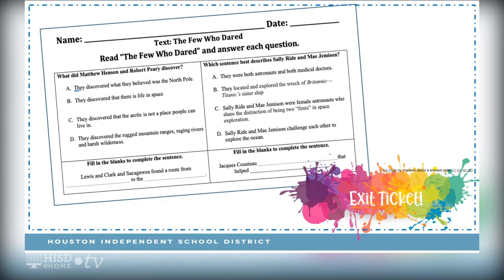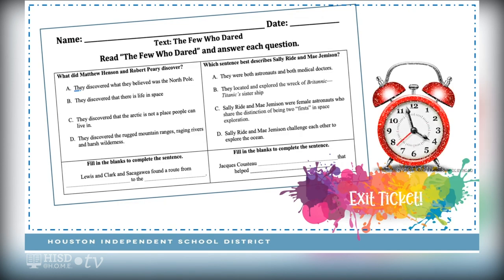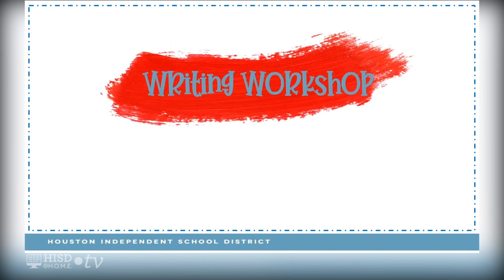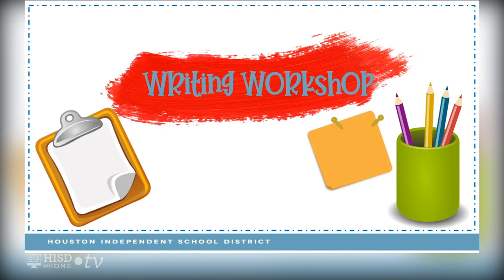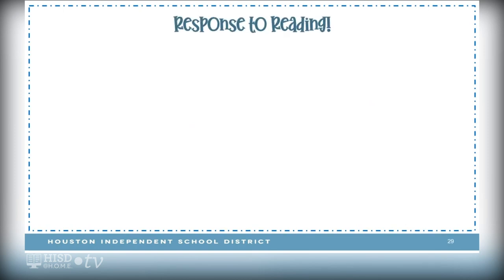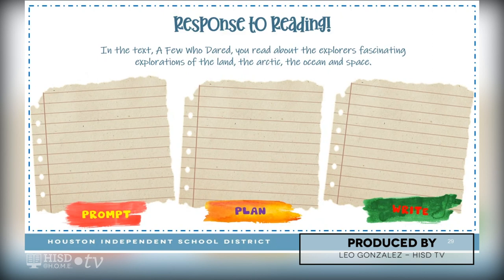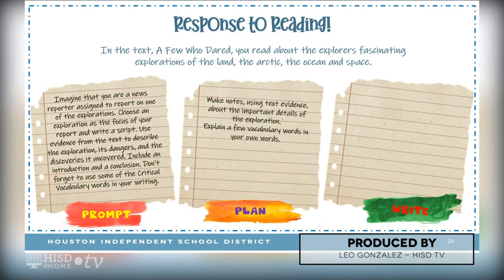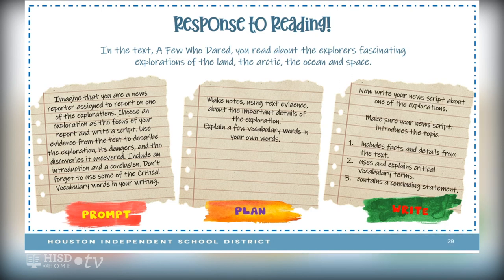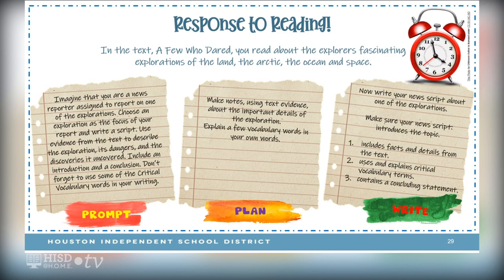Here's your exit ticket. Read A Few Who Dared and answer each question. Set your timer for 5 to 10 minutes to complete this activity. It's writing workshop time. Get your pencil, your paper, and your creative ideas ready. Today we will create a reading response. In the text A Few Who Dared, you read about the explorers' fascinating explorations of the land, the Arctic, the ocean, and space. Follow the steps below to create your reading response: first, read the prompt; then, create a plan; then, write. Pause this video and set your timer for 10 to 15 minutes to complete this activity.